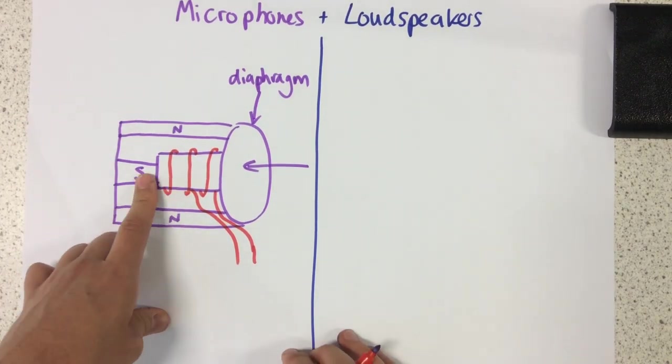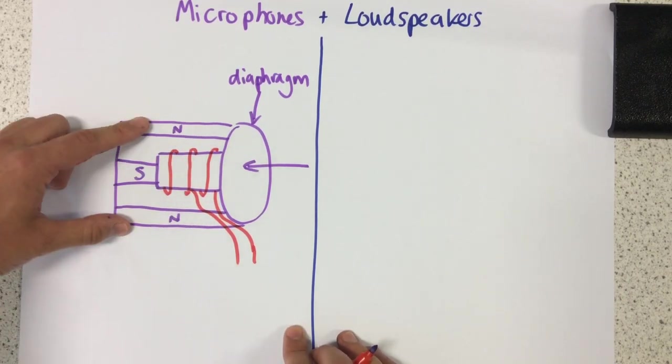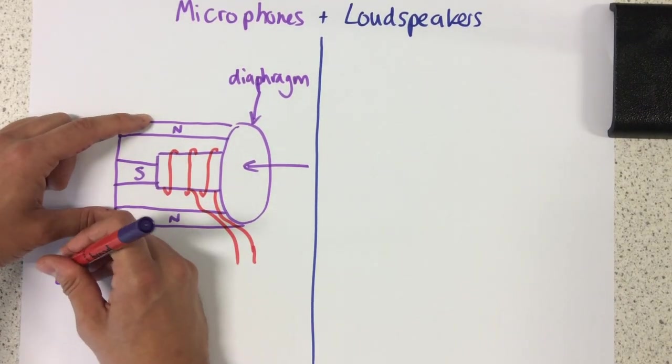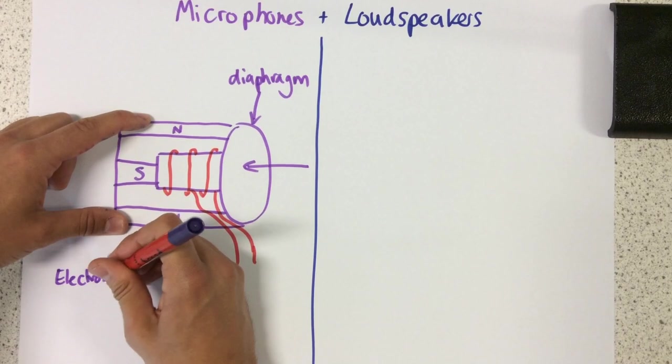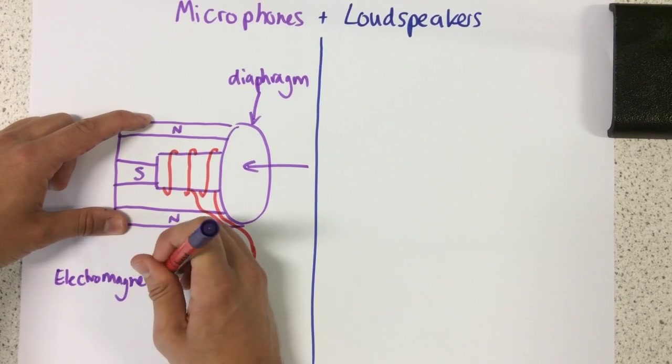Whenever we have the movement of a coil of wire within a magnetic field, we have the process of electromagnetic induction.